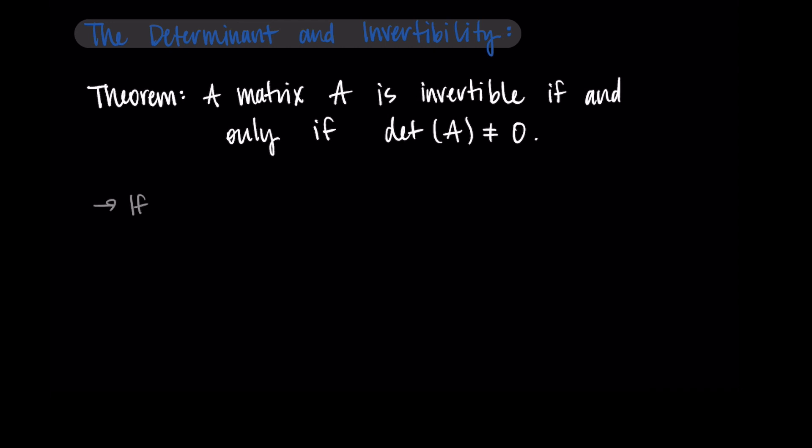So this says that if we find that the determinant of A is not equal to zero, then we know that A has an inverse. So if you show that the determinant of A is non-zero, this will tell you that A has an inverse.